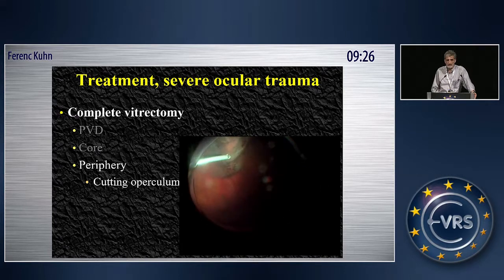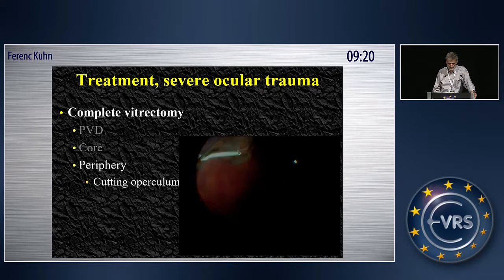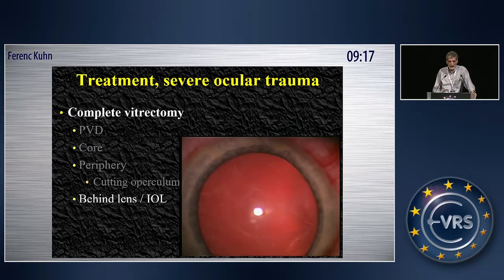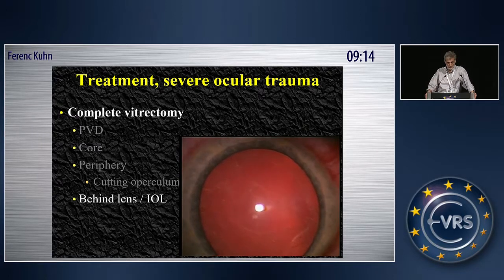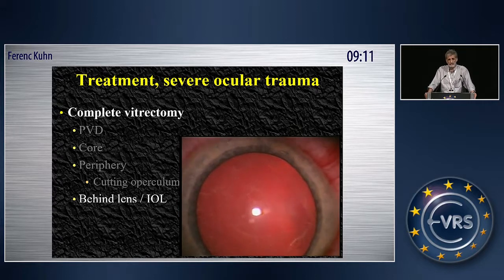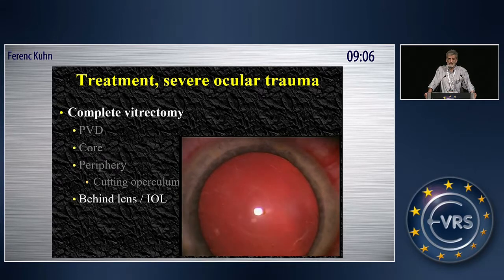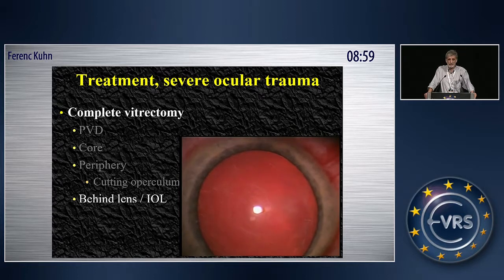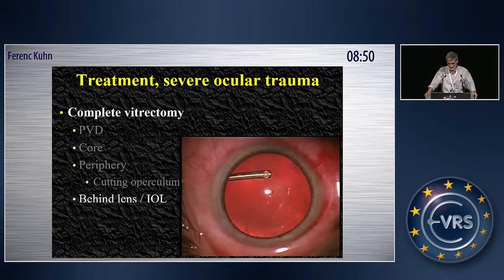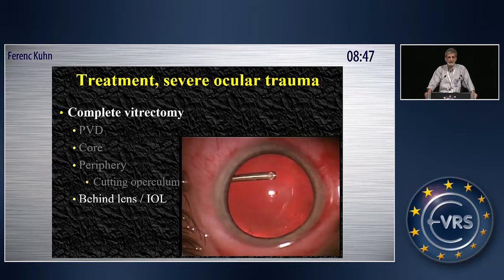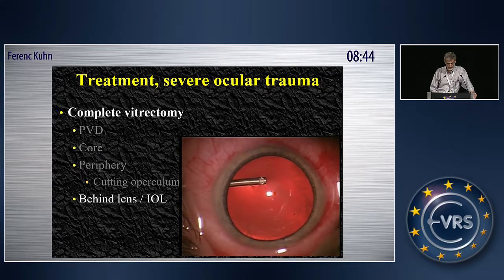There are certain things you can do during surgery to reduce the risk. Cutting the operculum is one of the things that you have to do as part of a complete vitreous removal. I always remove the vitreous behind the lens. This brief video shows the technique for how to do it if you want to preserve the lens. Usually I put a little air bubble behind the lens — if there is no vitreous, the air bubble will escape towards the lens periphery; if there is vitreous still there, the air bubble will get trapped.